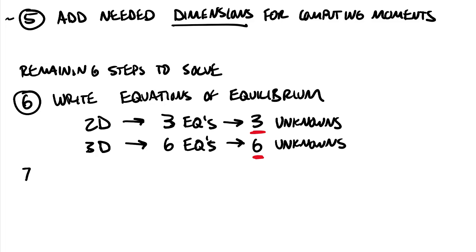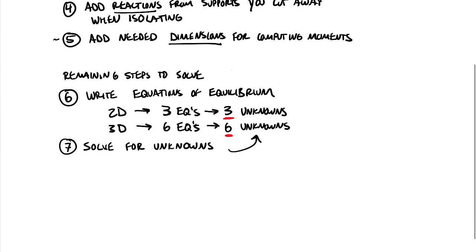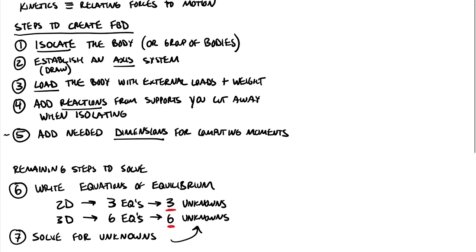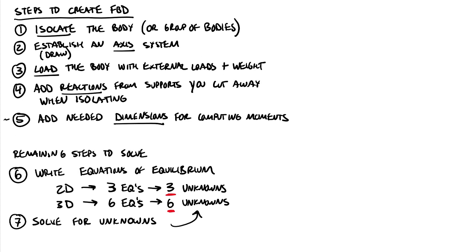And then step seven, which is probably the step you're most comfortable with because it's really just doing some math, is to solve these equations for your unknowns. So it turns out many of our unknowns on our equilibrium problems turn out to be the reactions. It's very common for us to know what the loading is, to know what the geometry is, to know what body we're trying to look at, and it's really this step four here that a lot of the effort is required to figure out not only what kind of reactions are available from supports but then also trying to solve for those unknown terms as you move forward.